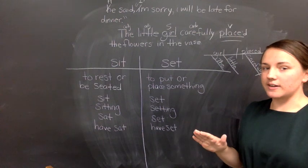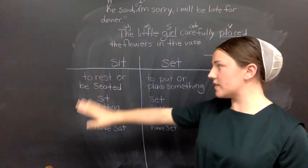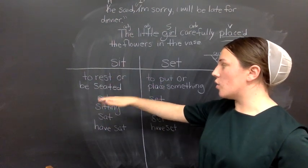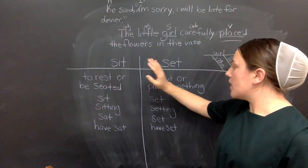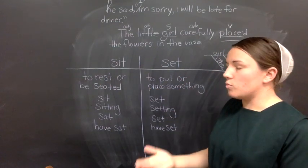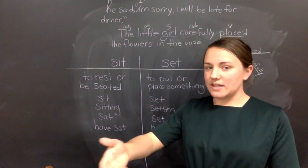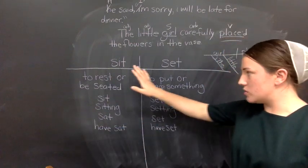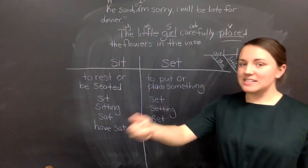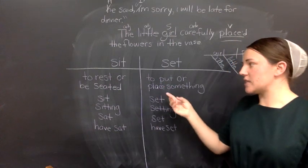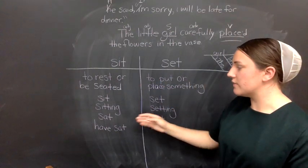Do you see the difference? So if you're going to sit down somewhere, this is the word you use. Whenever something is resting and being seated, you use sit. Now, whenever you're placing something, you use set.